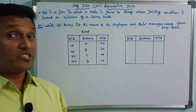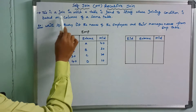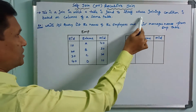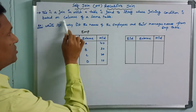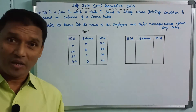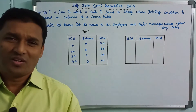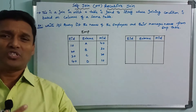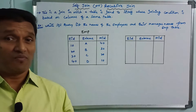Self-Join is a join in which a table is joined to itself, where the joining condition is based on the columns of the same table. If the table is joined to itself, it will be a Self-Join.